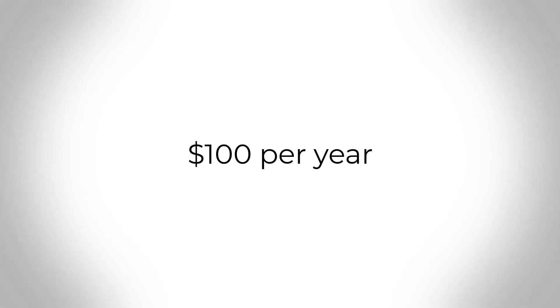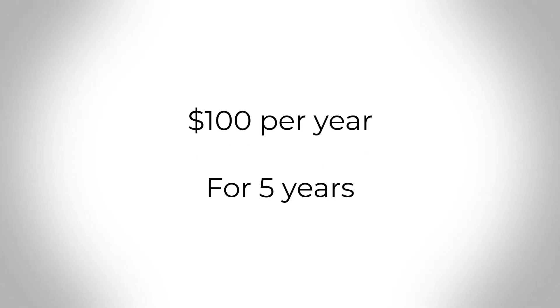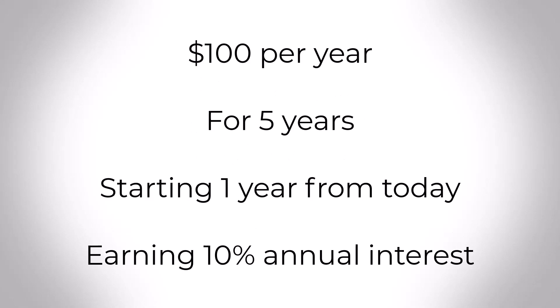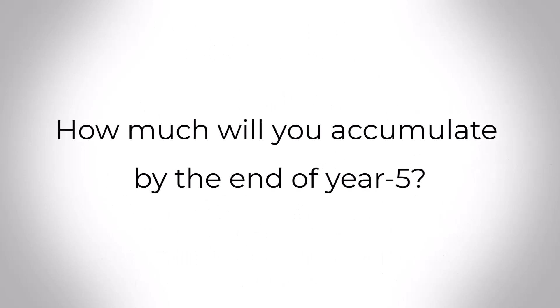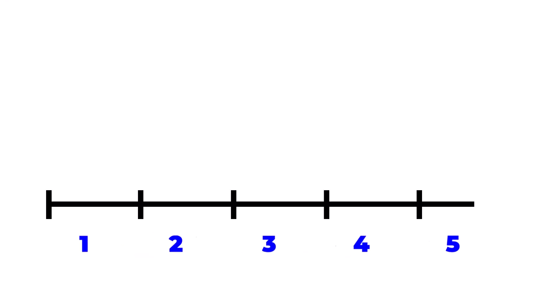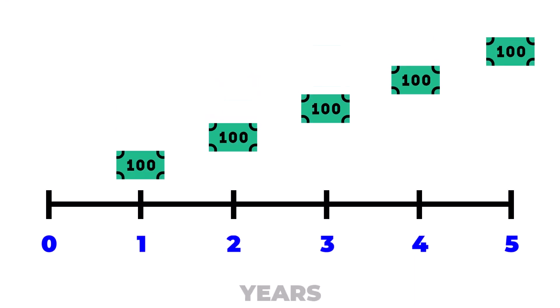Suppose you decide to invest $100 each year for the next 5 years, starting 1 year from today, at an annual interest rate of 10%. You want to know how much those investments will grow to by the end of the 5th year. Here's a timeline to show this in action. The numbers along the timeline represent the years. 0 represents today, and notice that there's no dollar amount there because we plan on starting this annuity 1 year from today.